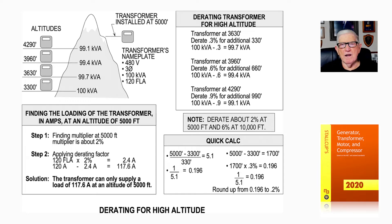Now to derate the transformer for high altitude, a transformer at 3,630 feet, derate 3% for additional 330 feet. So you take 100 kVA times 0.3, and that would be 99.7 kVA. Then a transformer at 3,960 feet, you'd have 6% because it's 2 times 330. So 100 kVA minus 0.6 is 99.4.